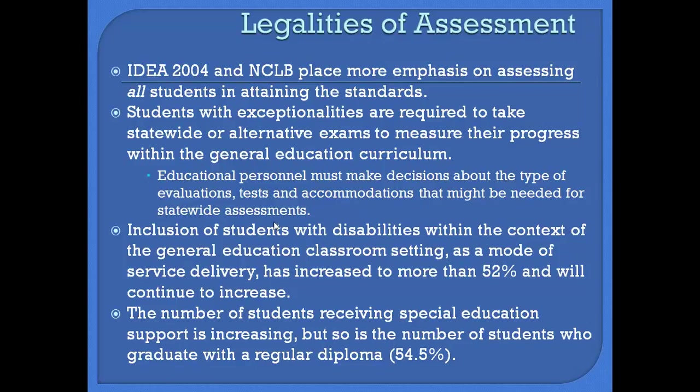Many students, such as those with Asperger's, are in inclusion classrooms, even though they are technically seen as having a severe disability area. Disability areas can be severe or mild depending on the severity of the disability. Although the federal government looks at severity within the disability area, that doesn't always pan out that way. We need to look at the number of students receiving special education support, which is also increasing.